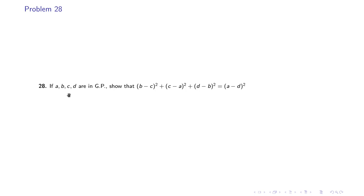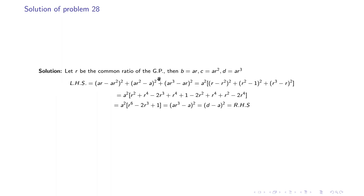Problem 28: If a, b, c, d are in GP, prove that (b−c)² + (c−a)² + (d−b)² = (a−d)². Taking r as the common ratio, we set b = ar, c = ar², d = ar³, then substitute into the left-hand side and expand to verify it equals (a − ar³)² = (a − d)².